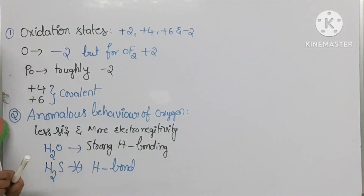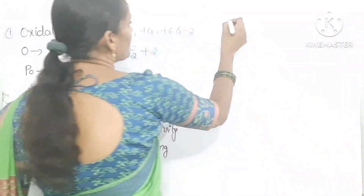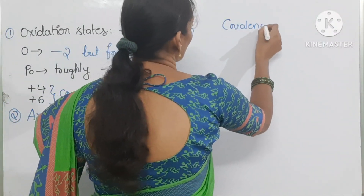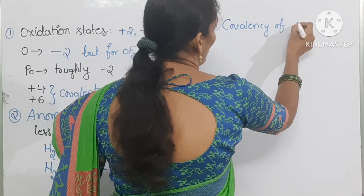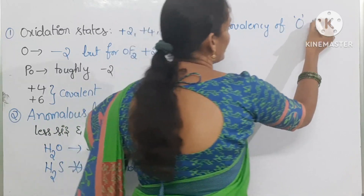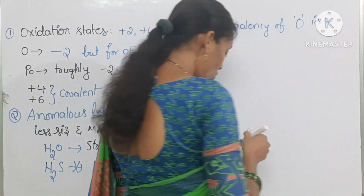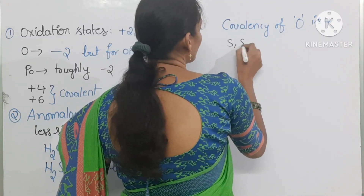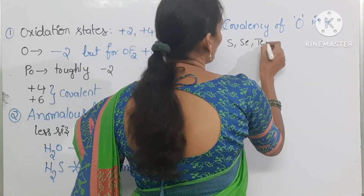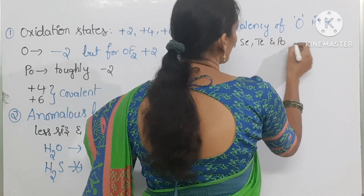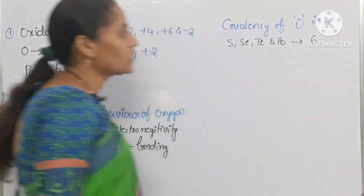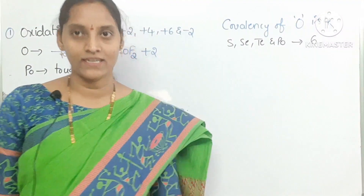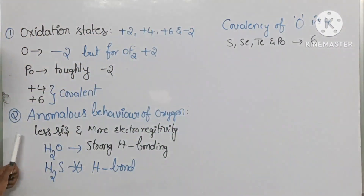Covalency of oxygen is 2 (maximum 4), while sulfur, selenium, tellurium, and polonium show a covalency of 6 in their excited state levels.